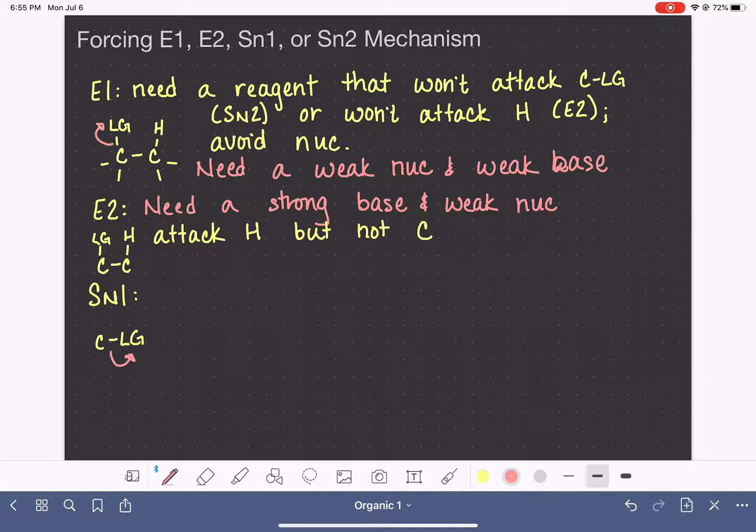But it can't be too good of a nucleophile. If it's a strong nucleophile, it'll attack the carbon right away. And that will give us the SN2 path. So for the SN1, we need a weak base for sure because we don't want anything going after a hydrogen. And also, we need a weak nucleophile. So that allows the leaving group to fall off.